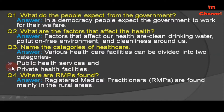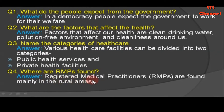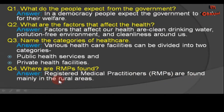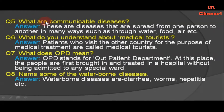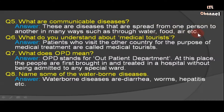Question number four: Where are RMPs found? Answer: Registered Medical Practitioners (RMPs) are found mainly in the rural areas. Question number five: What are communicable diseases? Answer: These are diseases that are spread from one person to another in many ways, such as through water, food, air, etc.